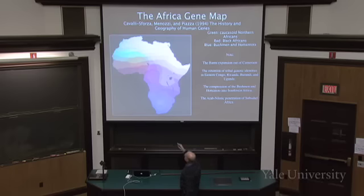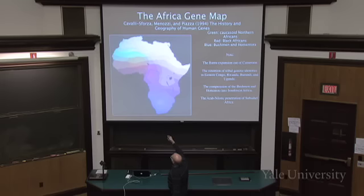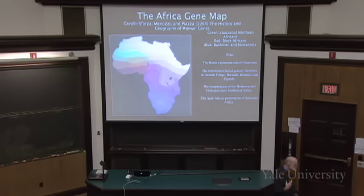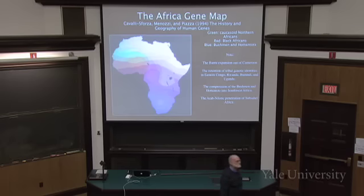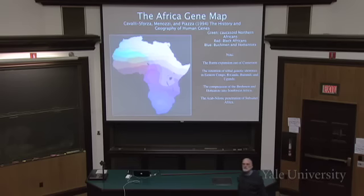There was a kingdom in Mali centered around Timbuktu, and an orange spot on the map is a relic of that. The history of human movement on the face of the globe is written in the genes and can, to a certain extent, still be recovered. This kind of study will no longer be possible after another few hundred years of jet travel and crossbreeding.